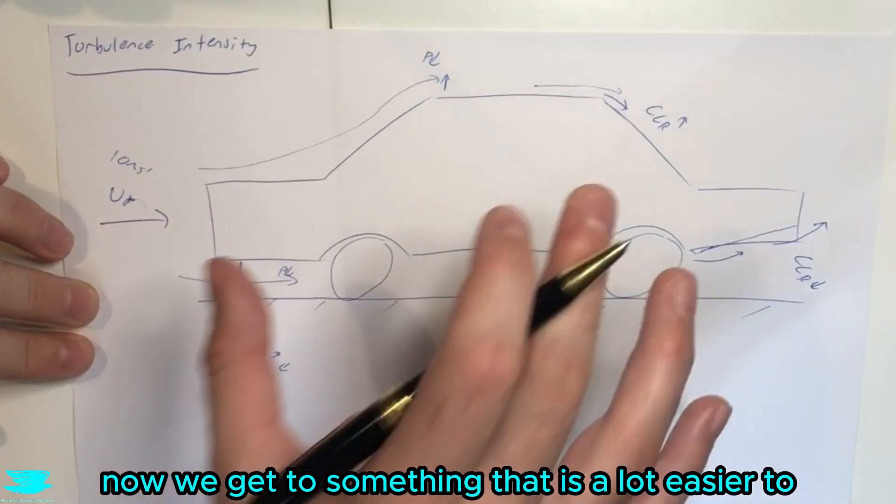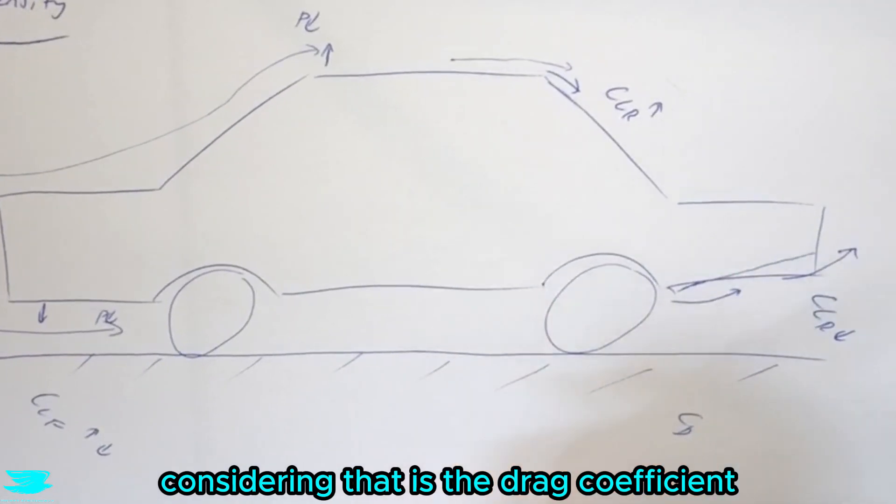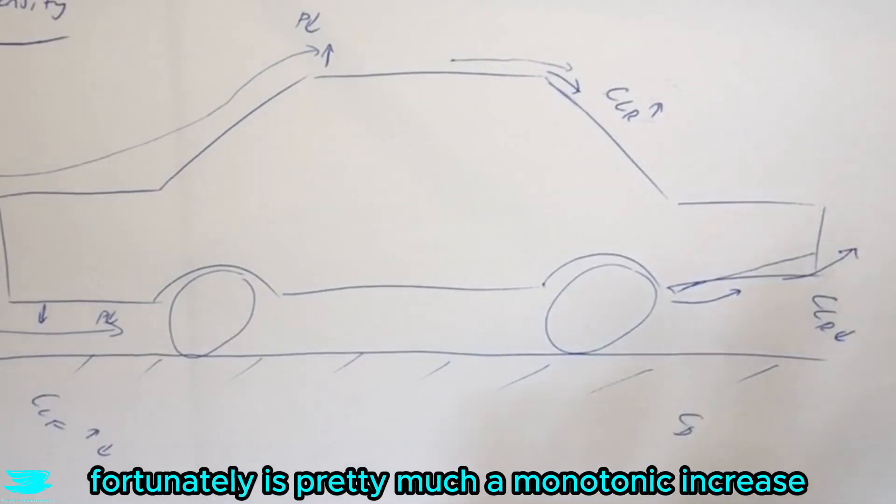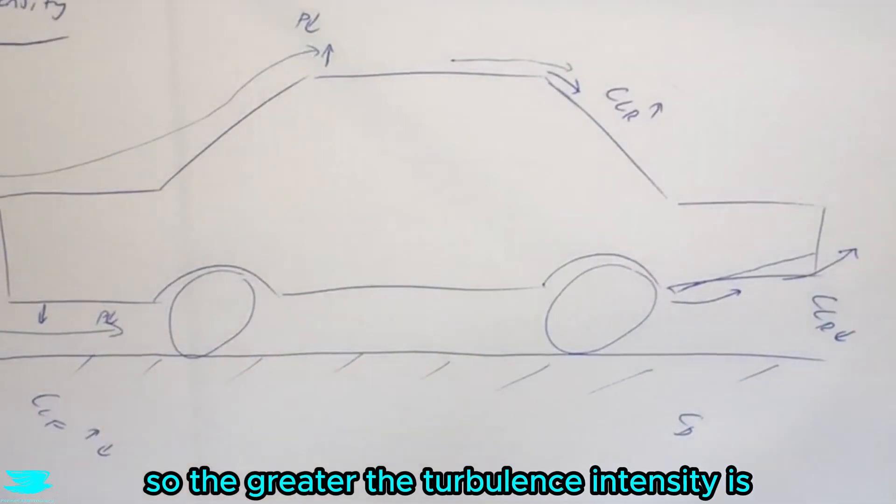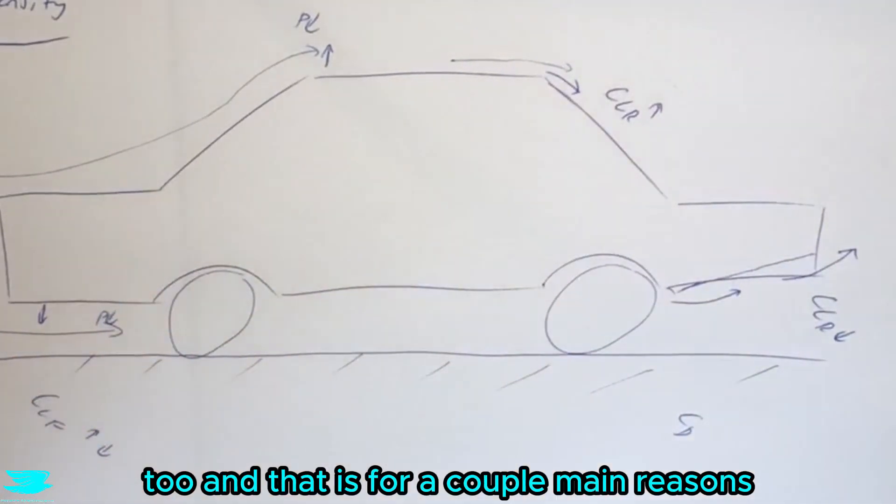Now we get to something that is a lot easier to consider, and that is the drag coefficient. Now the drag coefficient, fortunately, is pretty much a monotonic increase. So the greater the turbulence intensity is, the greater the drag coefficient becomes too. And that is for a couple main reasons.